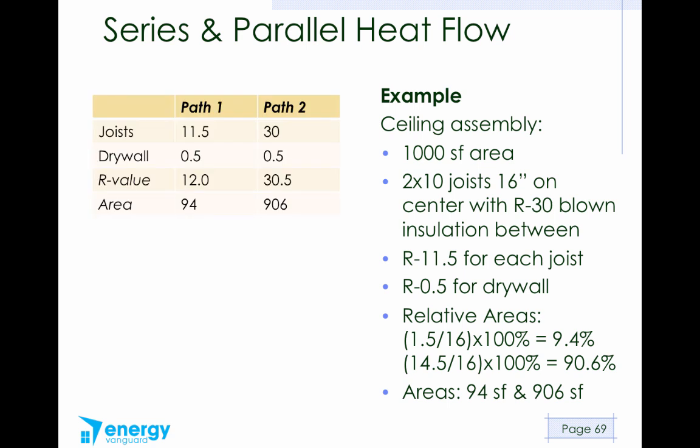All right, let's work through this now. So the first thing is we've got two pathways. We've got the pathway where the heat travels through the ceiling joists and then the drywall. That is what we're calling path 1. And we've got the pathway where the heat travels through the insulation and then the drywall. That's path 2. If it goes through the ceiling joists, the R value it encounters is 11.5 through the wood, and then 0.5 in the drywall.